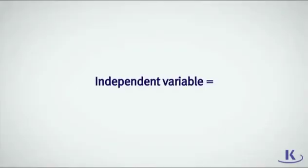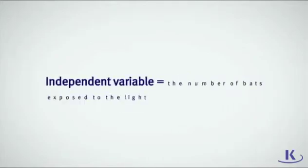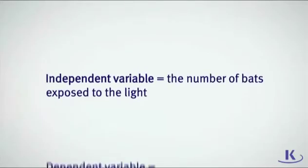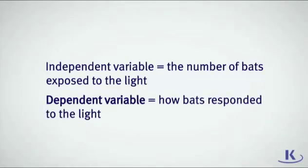What is the independent variable? The independent variable is the variable which is intentionally changed by the scientist — in this case, the number of bats exposed to the light. What is the dependent variable? The dependent variable is the variable measured in the results. In this case, the dependent variable is the bat's response to the light.